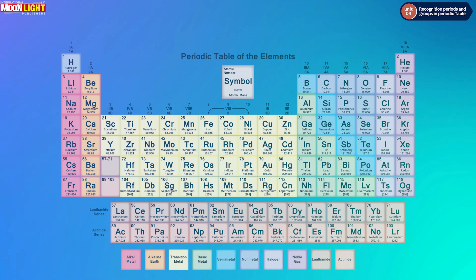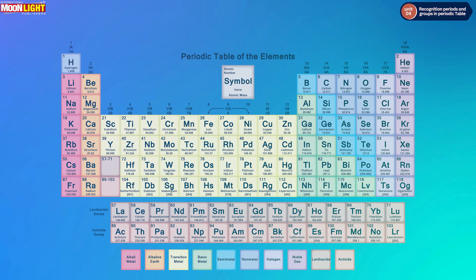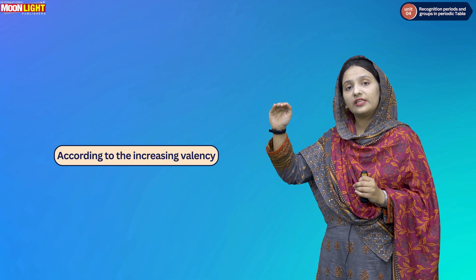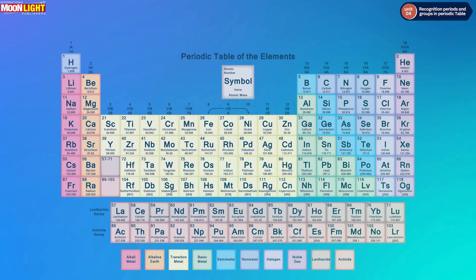If you see the periodic table, the first element is hydrogen. The elements are arranged by increasing atomic numbers: 1, 2, 3, 4, 5, 6. This is the increasing atomic number arrangement of elements in the periodic table.